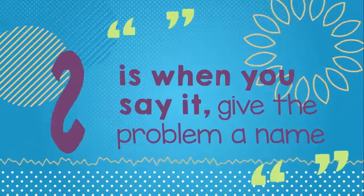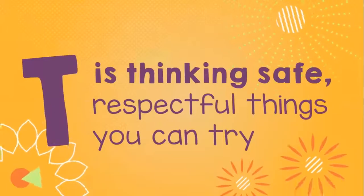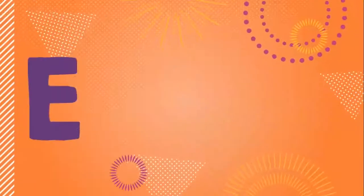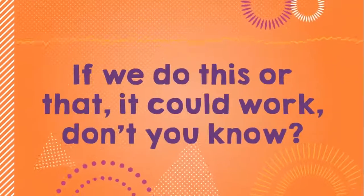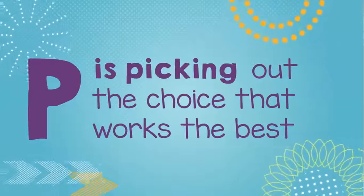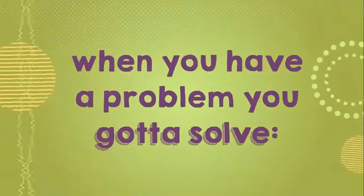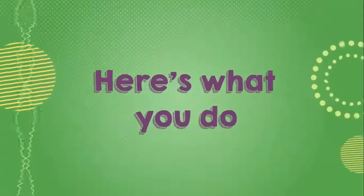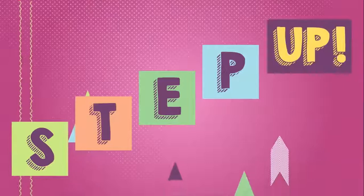S is when you say, give the problem a name — we can't agree on the rules of this game. T is thinking safe, respectful things you can try — we could take turns or try your rules some other time. E is exploring how those things you think might go — if we do this or that, it could work. P is picking out the choice that works the best — step it up and you will see you won't be stressed. Step up! Step up and I'll see you guys later.